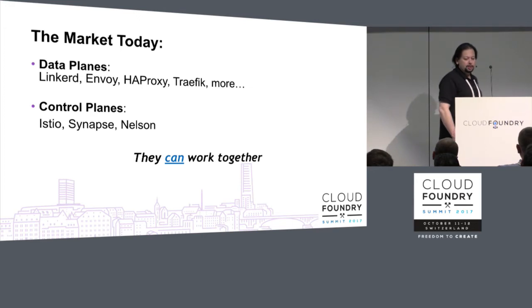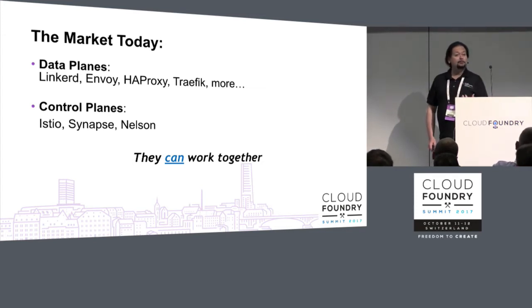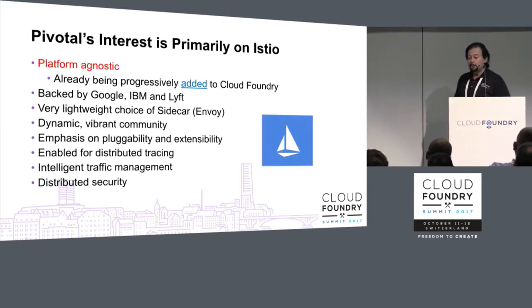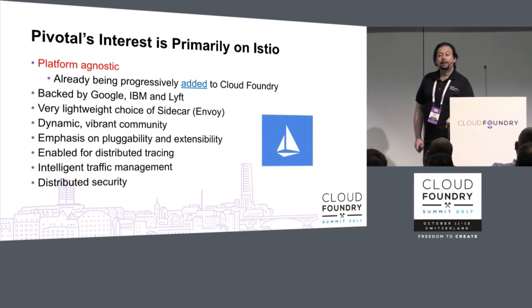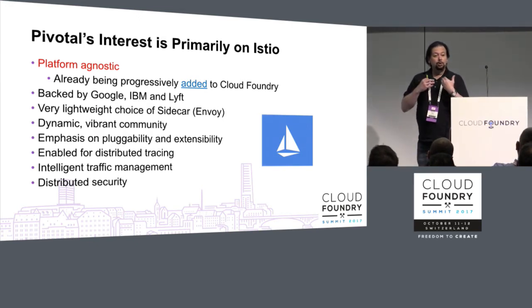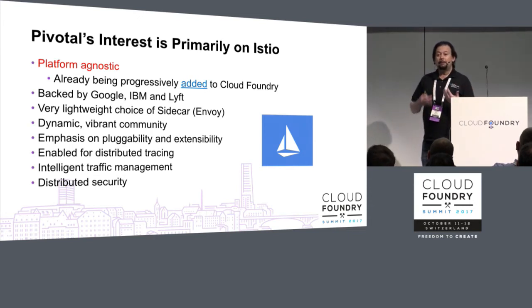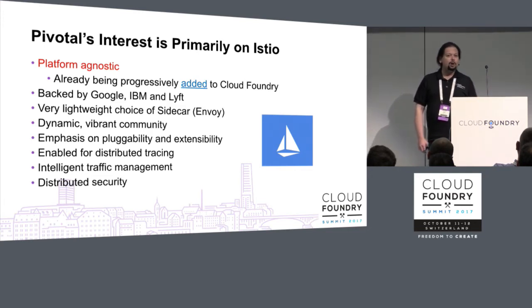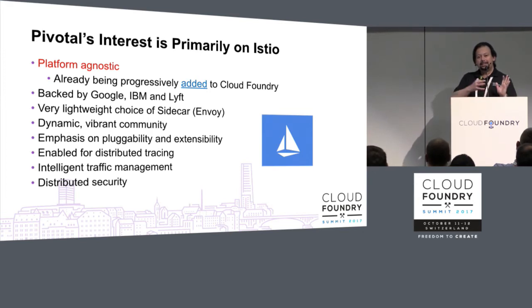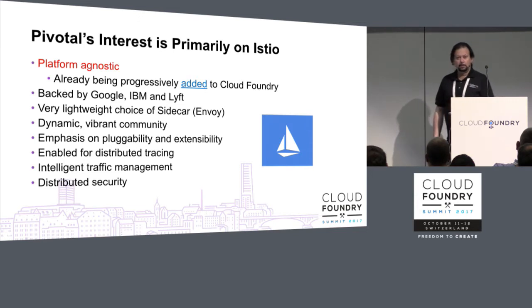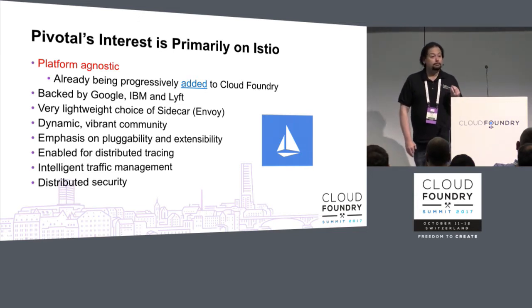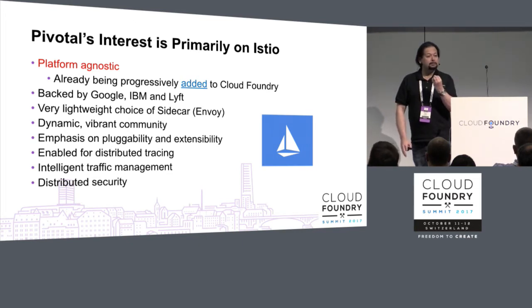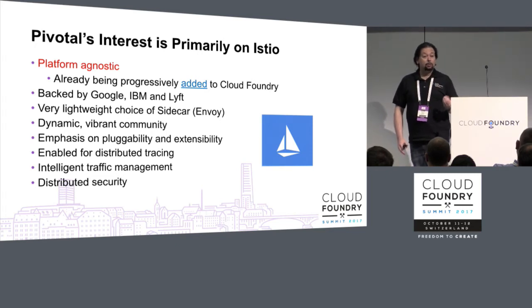Istio is a project originally sponsored by IBM, Google, and Lyft — Lyft in particular because they're the ones behind the Envoy proxy, which is what Istio uses. At Pivotal we're particularly interested in Istio because it's platform agnostic — it doesn't require Kubernetes or Cloud Foundry specifically; it can be adapted to any platform. It's already being progressively added into Cloud Foundry. The next stage you'll see is Envoy proxies being deployed with every app — when you CF push, in addition to the single binary, you'll now also have an Envoy sidecar alongside it.